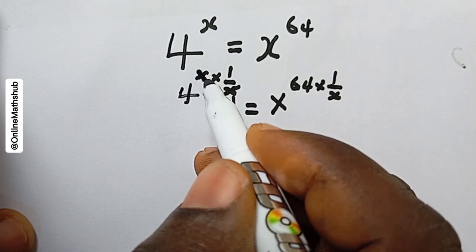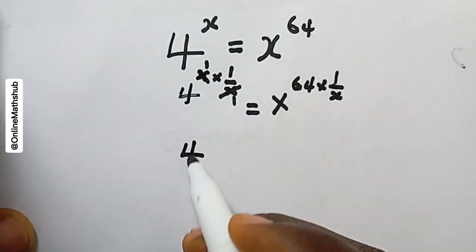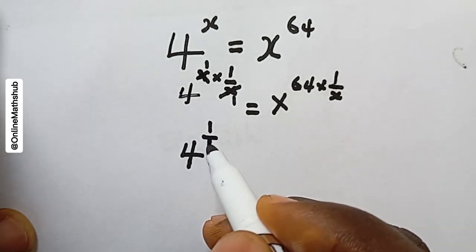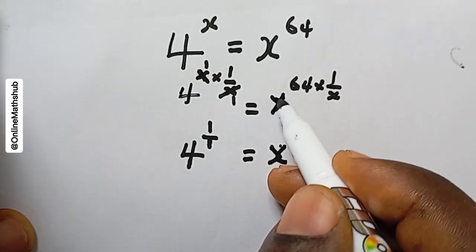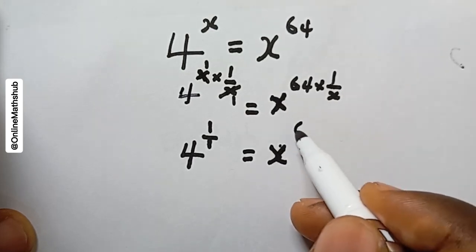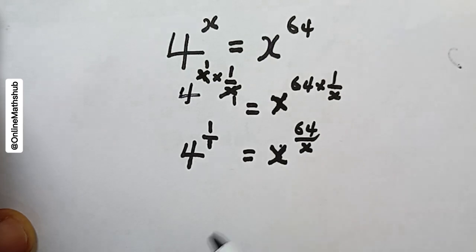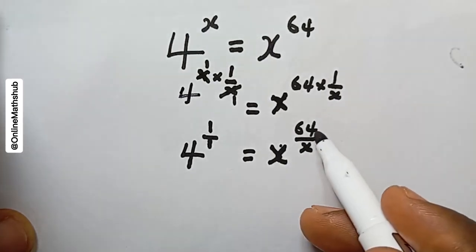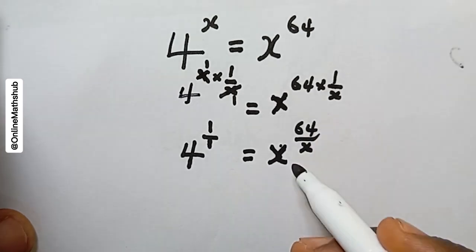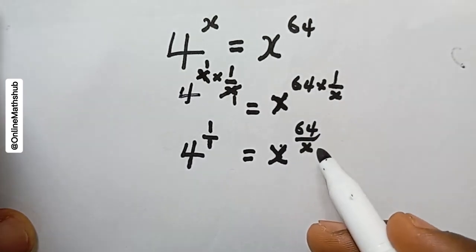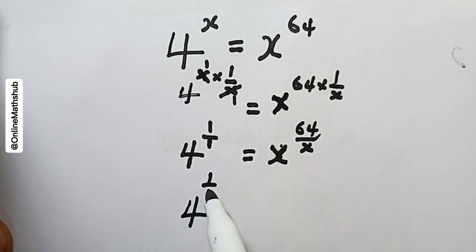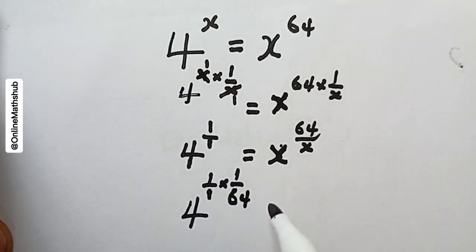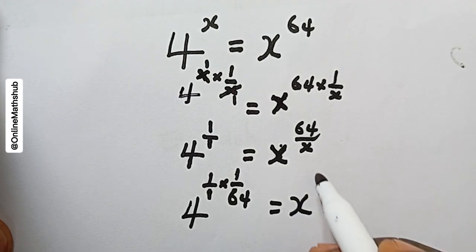So multiplying both sides by one over x, we get 4 to the power one over x on the left side. On the right side we have x to the power 64 divided by x. Next I will also remove the 64, dividing both sides by one over 64, so that items containing x are on the right-hand side and other items on the left.